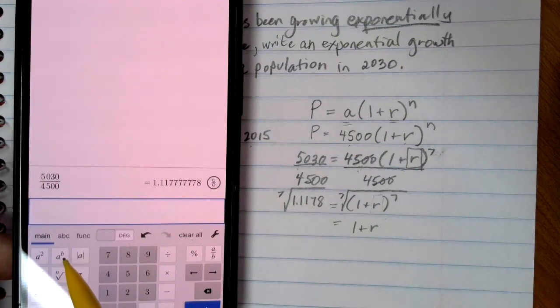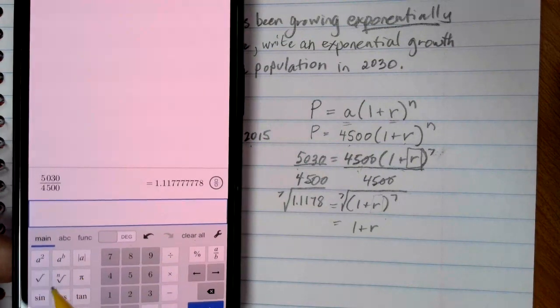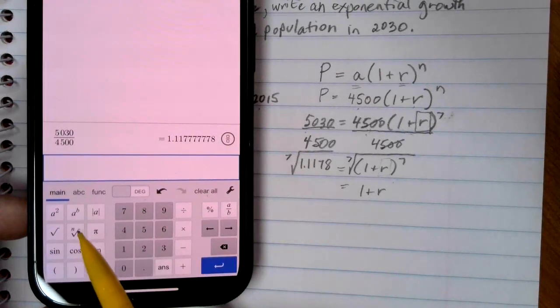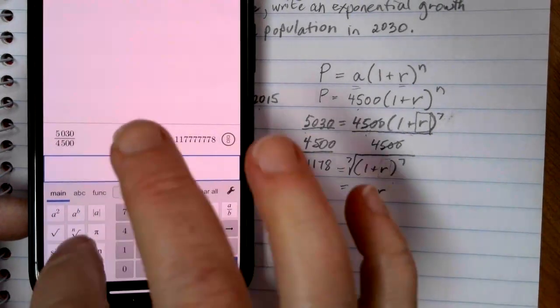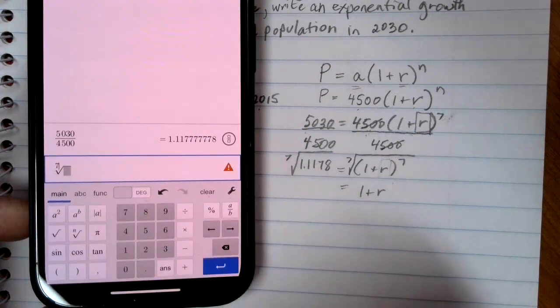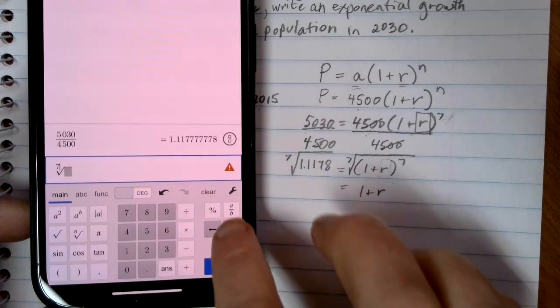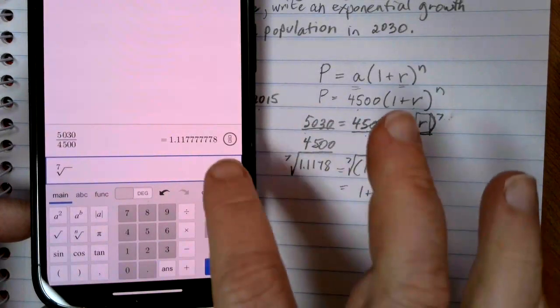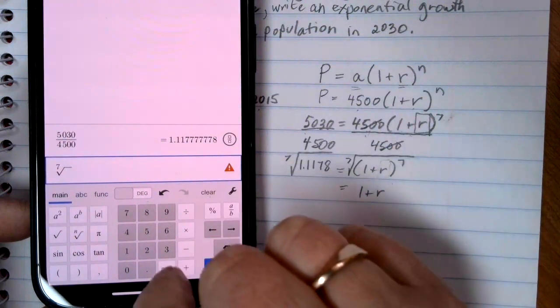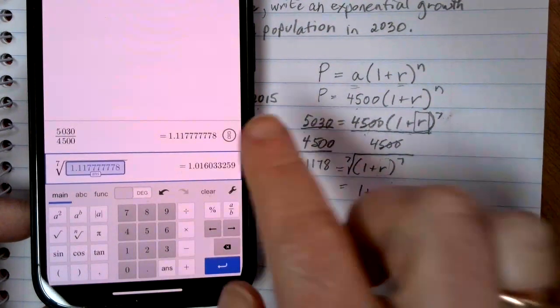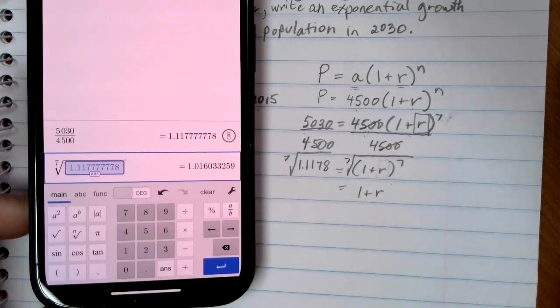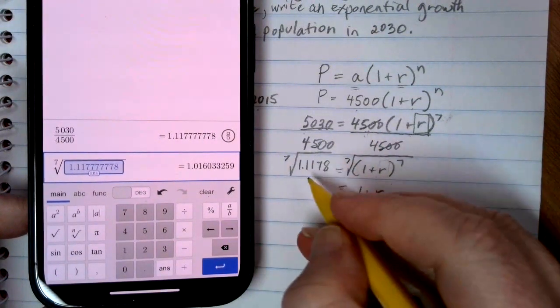On the left side, I actually have to take the 7th root of that 1.1178 answer. We want to use that button to find the 7th root. So we're going to type 7 up there in the top part. That says I want to do the 7th root. And then we want to put in this 1.1178. You can type everything in or we can just use that ANS button and it'll copy over the last answer that was in Desmos. So now what we have here is 1.016.